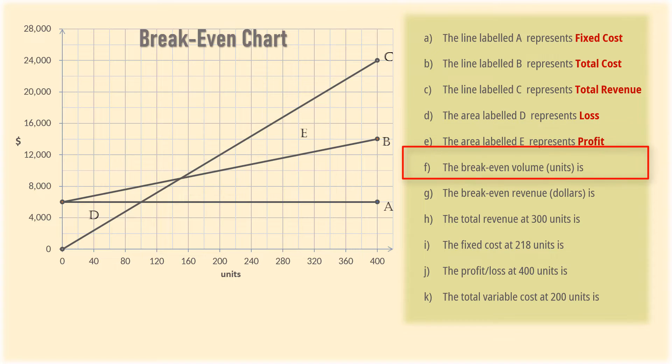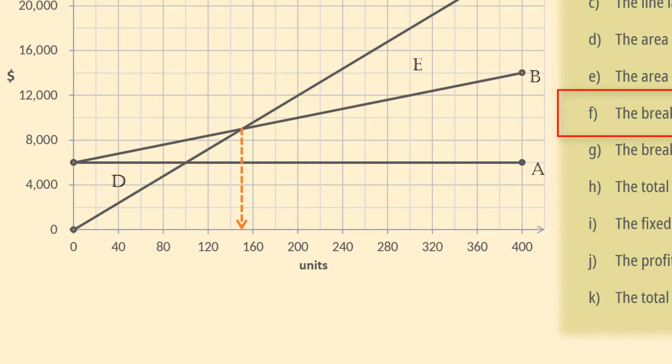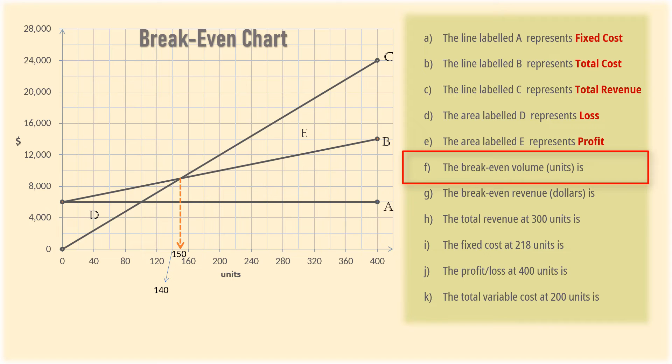For part F, the break-even volume in units can be found by tracing the intersection of the total revenue function and total cost function down to the unit axis here. Note that the midpoint of 120 and 160 here is 140. That is 120 plus 160 divided by 2. So the midpoint of 140 and 160 will be 150. That is, the break-even point in units is 150.